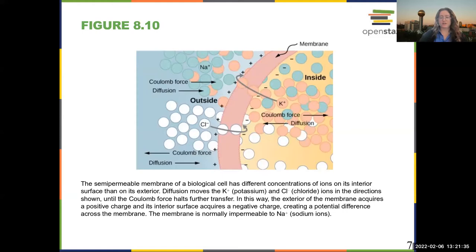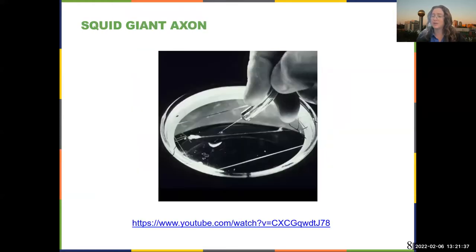There's a fun application: how they actually learned about how neurons transmit signals. They actually used a squid giant axon, which is a neuron that runs over the entire length of the squid. It's so large—as large as a millimeter—that they could put little electrodes into the cell.